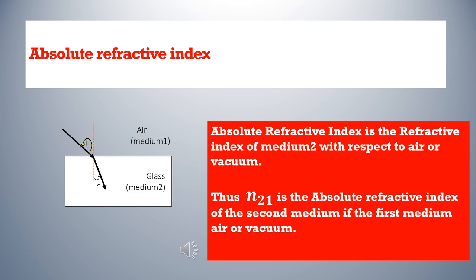Absolute refractive index is the refractive index of medium 2 with respect to air or vacuum. Thus, n21 is the absolute refractive index of the second medium when the first medium is air or vacuum.